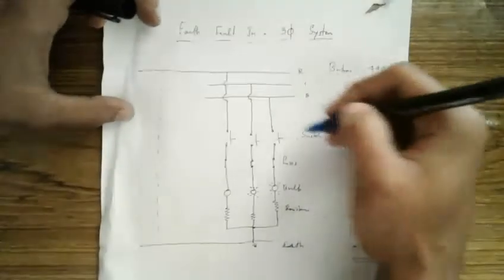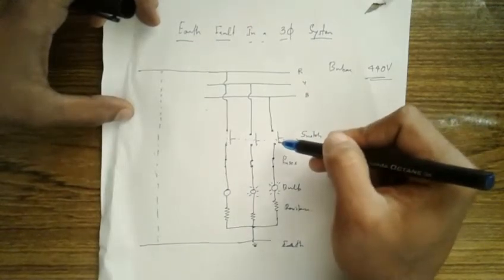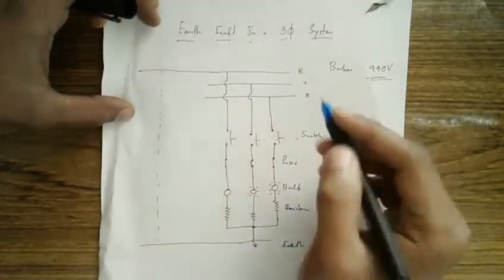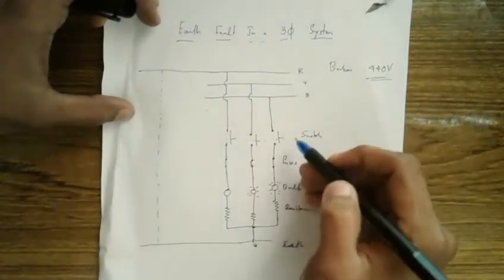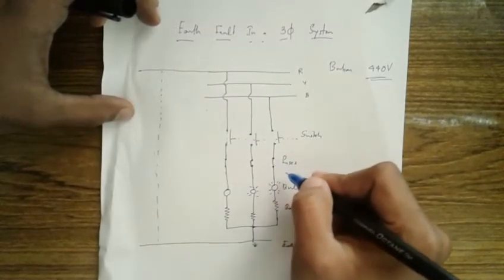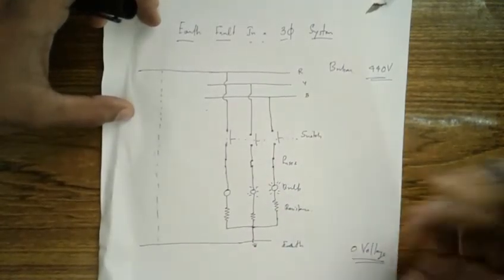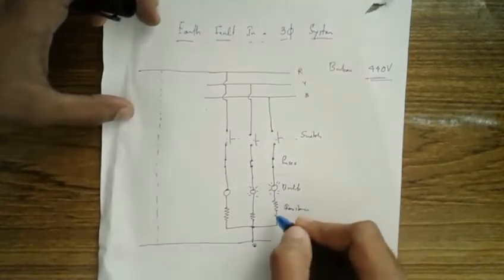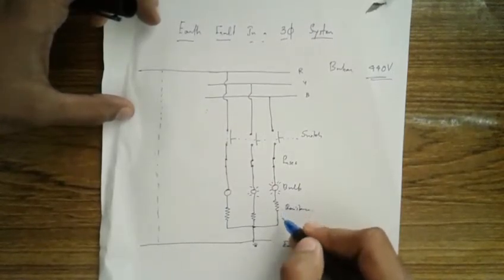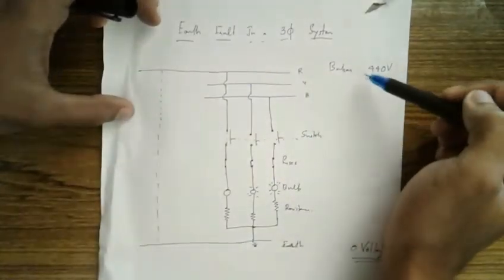If you want to know why all these components are there: the switch is required because we want to close the circuit only when we need to test it - we don't want it connected all the time, otherwise it's always detecting leakage. The fuse is just for safety. The bulb is clearly an indication of the earth fault. The resistance is there to limit the flow of current.